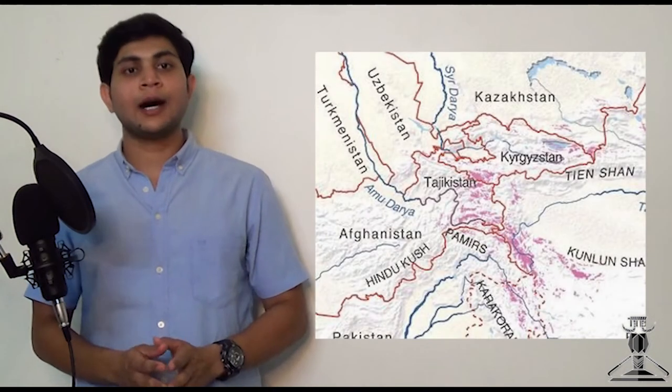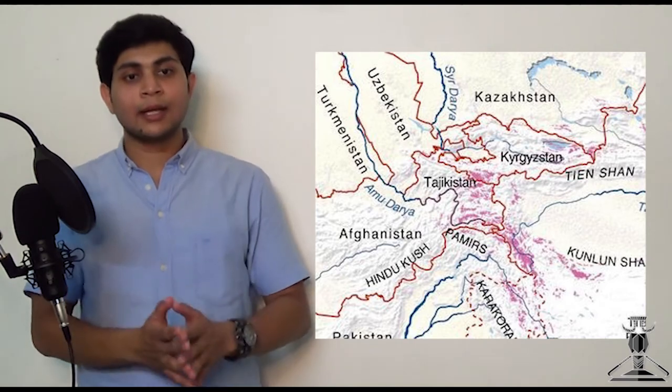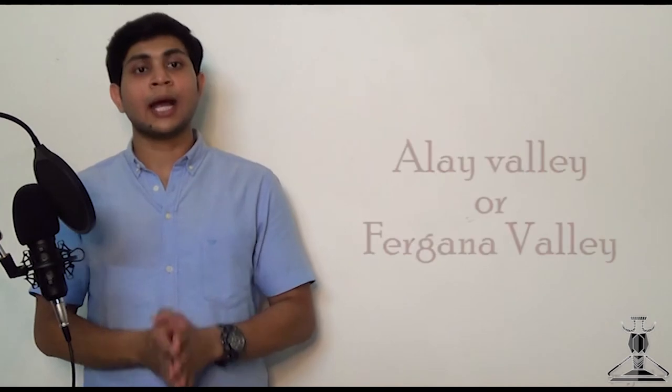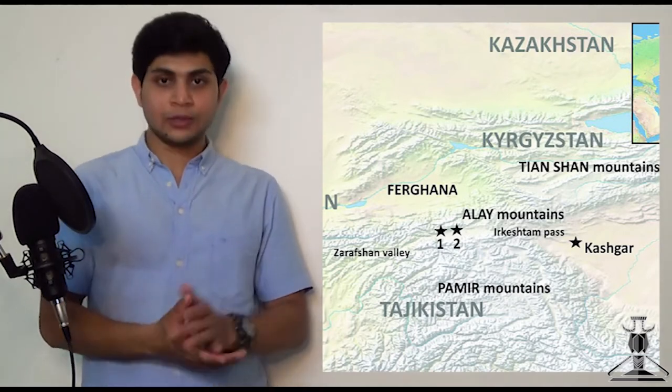Ketu Mala consists of the Ayola plains to the west of the Pamir mountain complex, lying now in northern Afghanistan, Turkmenistan, Uzbekistan, and Tajikistan. On the south of the Nila mountains and the northern side of Meru are the sacred Uttarkurus. This Uttarkuru is identifiable with the Alay valley or the Fergana valley. The Mahabharata description of the Nila mountains is not detailed enough to decide between these identifications.